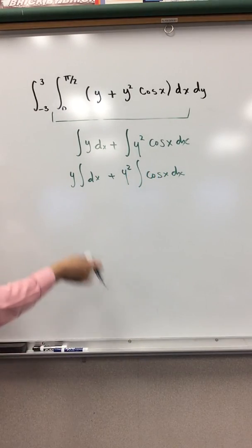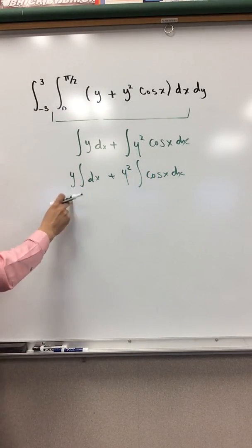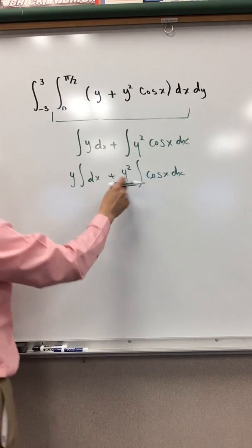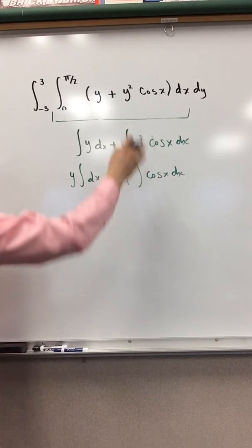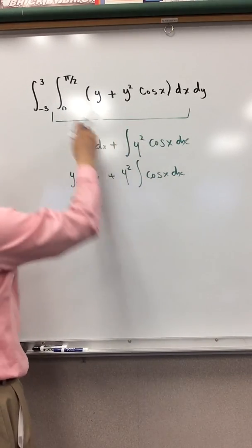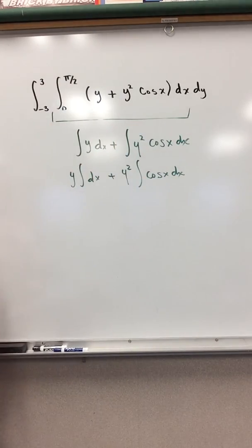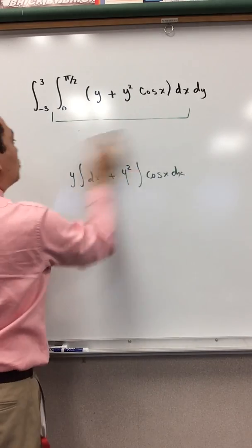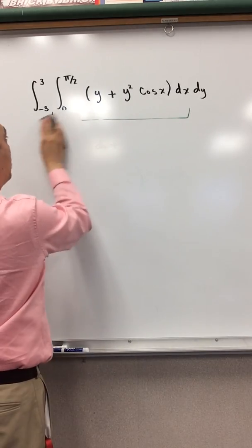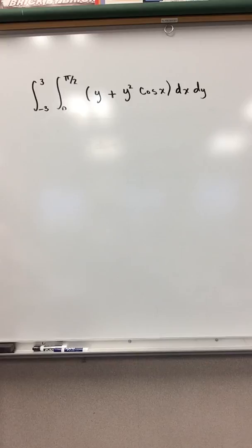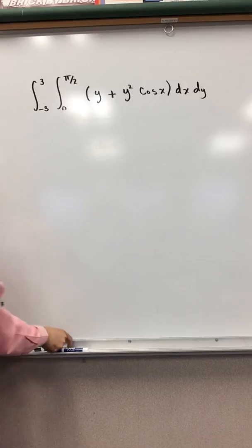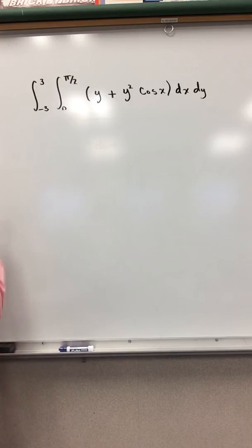So we're going to have y·∫dx plus y²·∫cos x dx. And then solving from there, we're going to have xy plus y² sin x. Then we evaluate from 0 to π/2. Those are the steps we are going to take to solve this double integral.